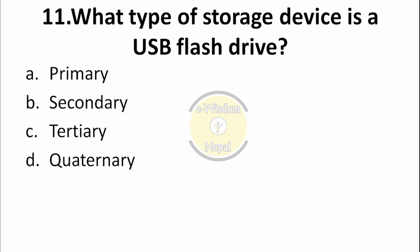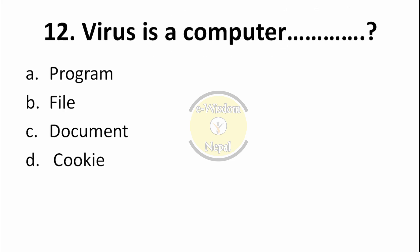Question number 11: What type of storage device is a USB flash drive? Options: primary, secondary, tertiary, quaternary. A USB flash drive is a secondary storage device. Option B is the correct answer.